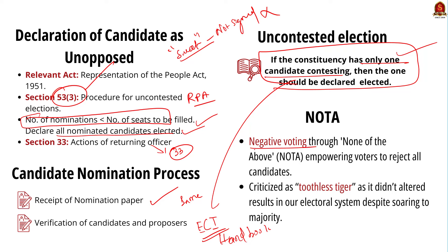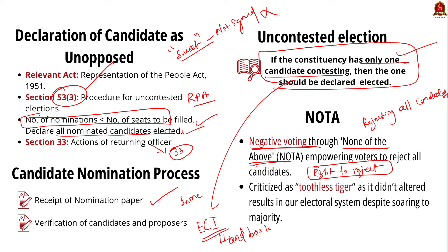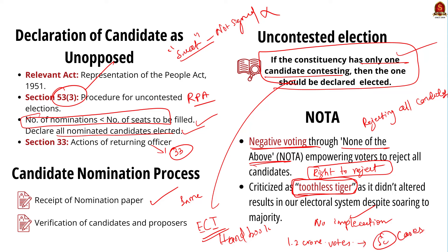Negative voting refers to rejecting all candidates in an election instead of choosing any contesting candidate. In India, it is exercised through NOTA — None of the Above. The main objective of NOTA is to enable electors who do not want to vote for any candidate to exercise their right to reject without violating the secrecy of their decision. However, many activists and constitutional experts criticize NOTA as a toothless tiger with no implications on results. Despite NOTA getting over 1.29 crore votes in state and Lok Sabha elections in the last five years, it did not alter results. This prompted filing of cases seeking fresh elections in constituencies where NOTA scored a majority, and the Supreme Court asked the Election Commission to respond and give its view.